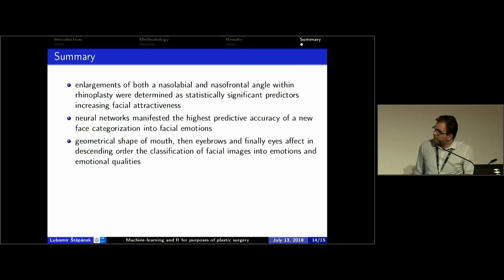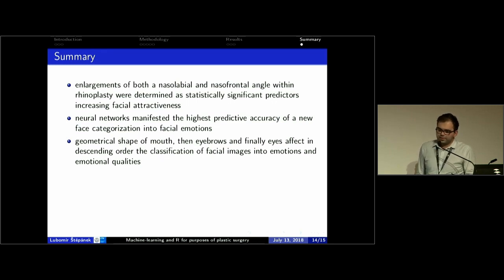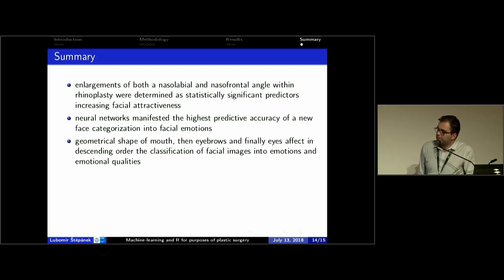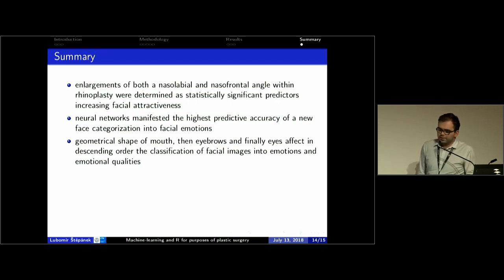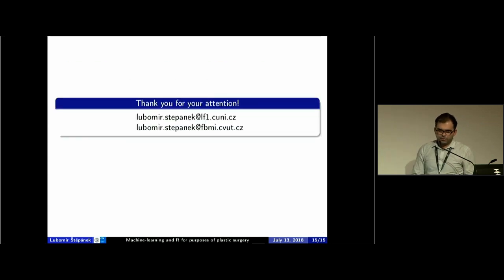In conclusion, enlargement of both the labial and nasal frontal angles are significant predictors increasing the level of facial attractiveness after undergoing rhinoplasty. Neural networks manifest the highest predictive accuracy in classification of facial images into facial emotions. Finally, geometry of mouth, eyebrows, and eyes — in descending order — affects classification of facial images into facial emotions or facial emotional qualities. Thank you, and enjoy your lunch.